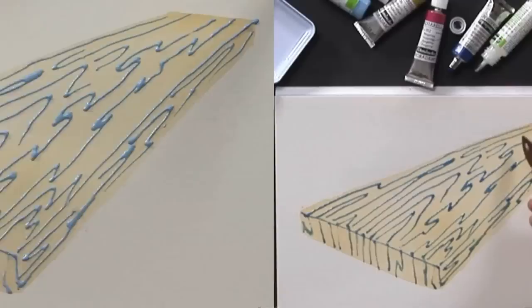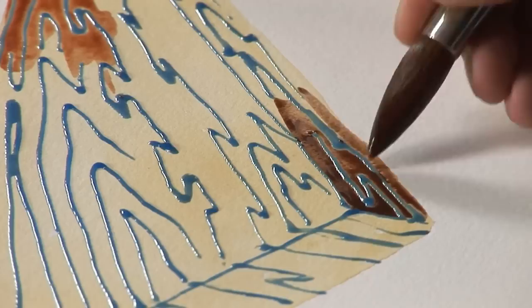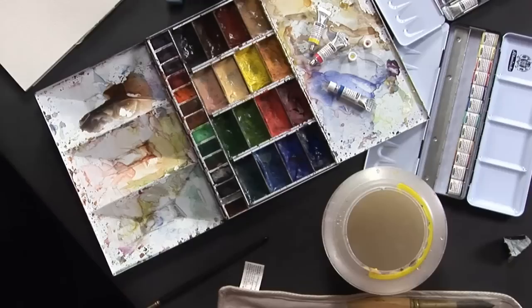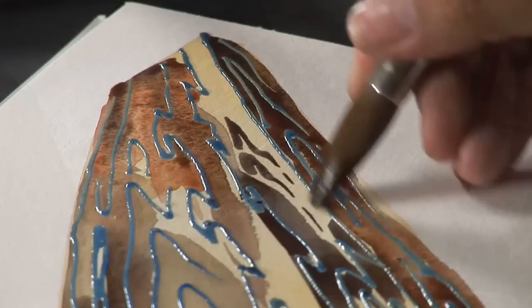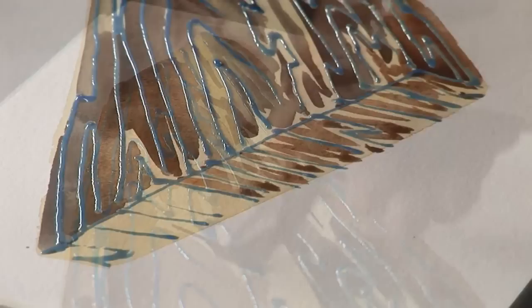For overpainting, I use brown tones like sienna, burnt sienna, burnt umber, or darker tones like ivory black. Or I combine the brown tones with cobalt blue or ultramarine blue.